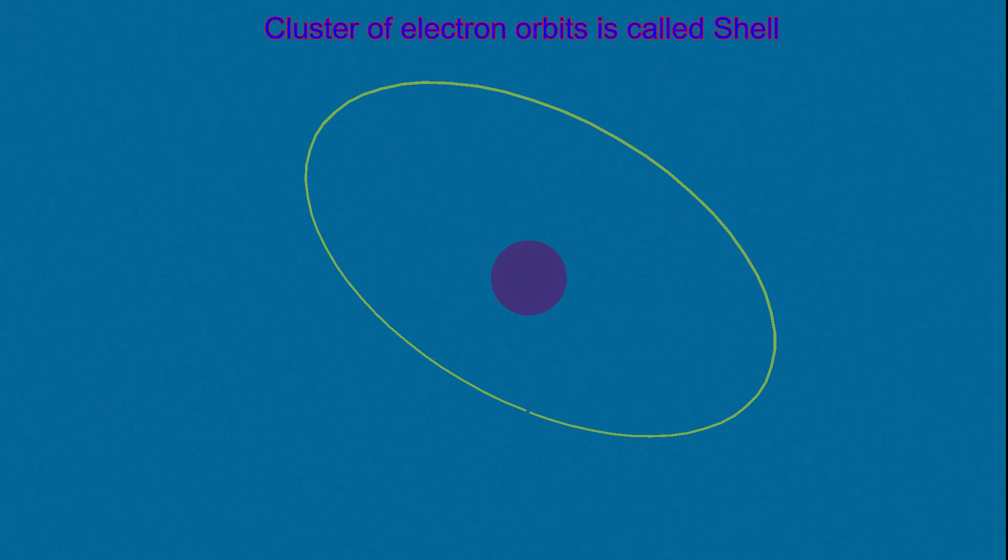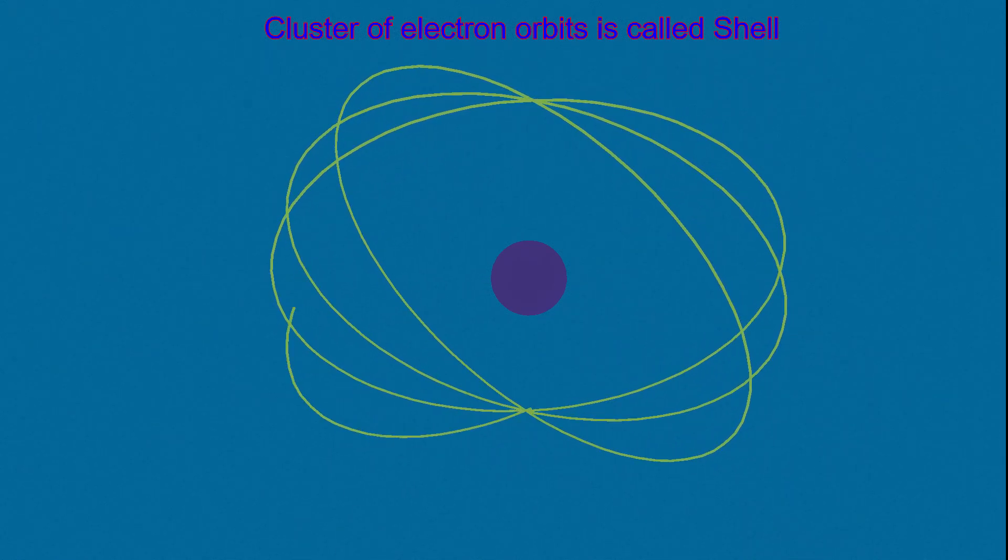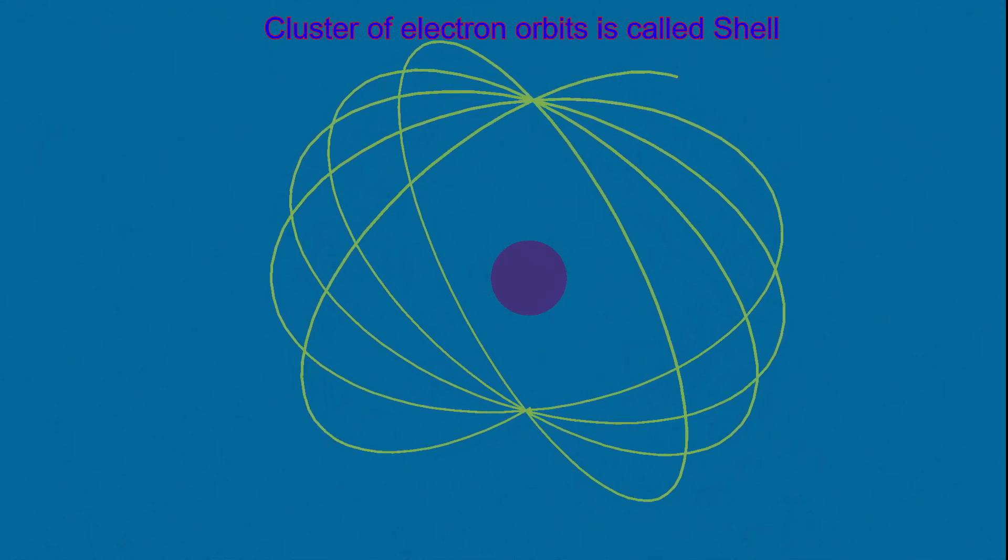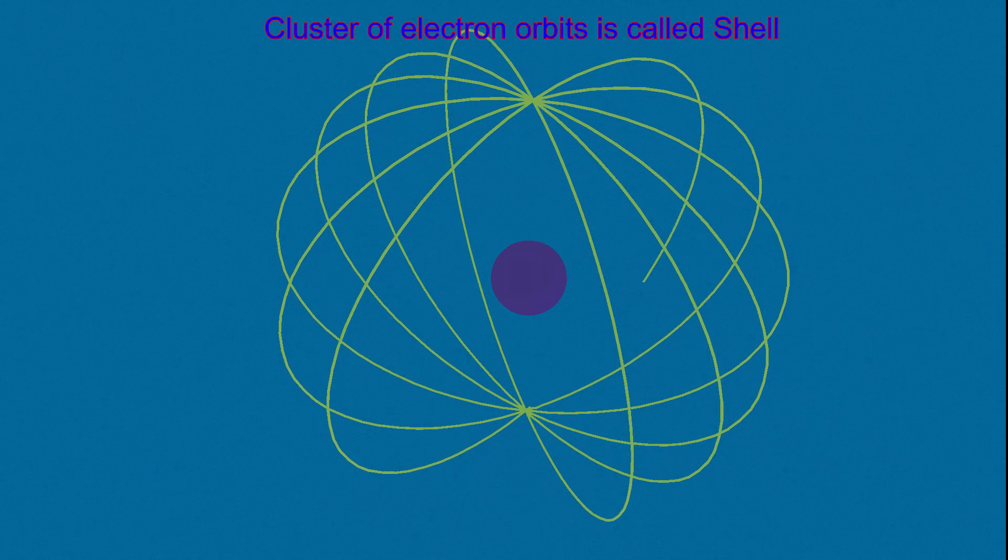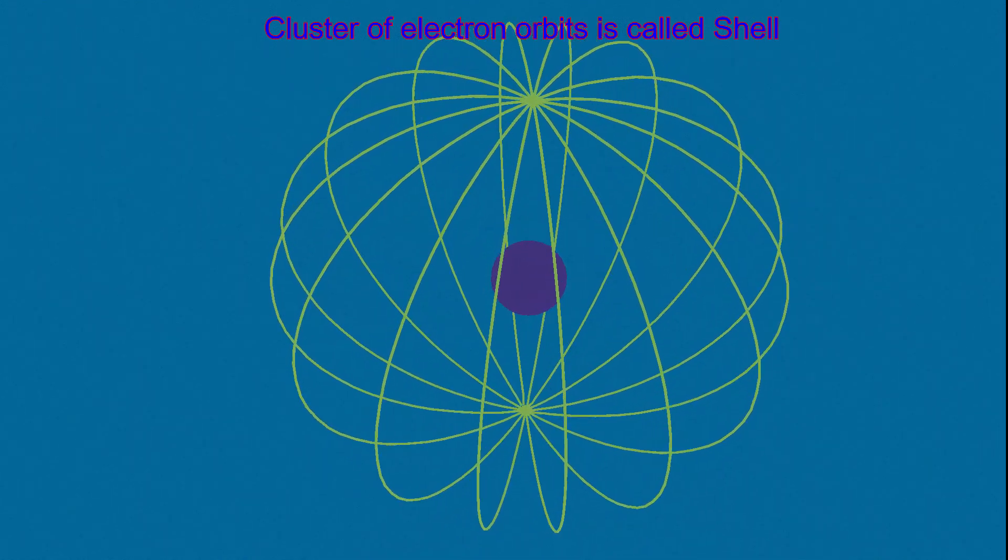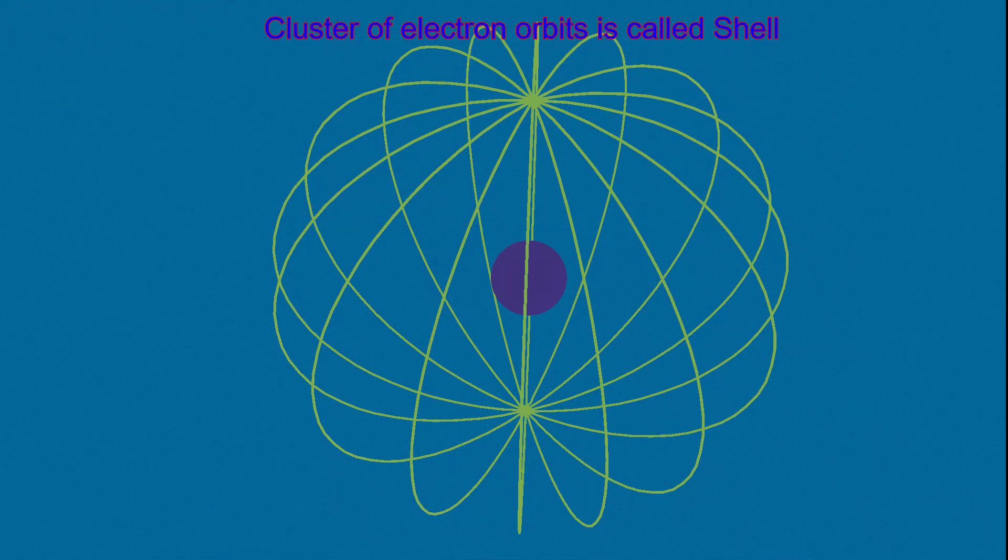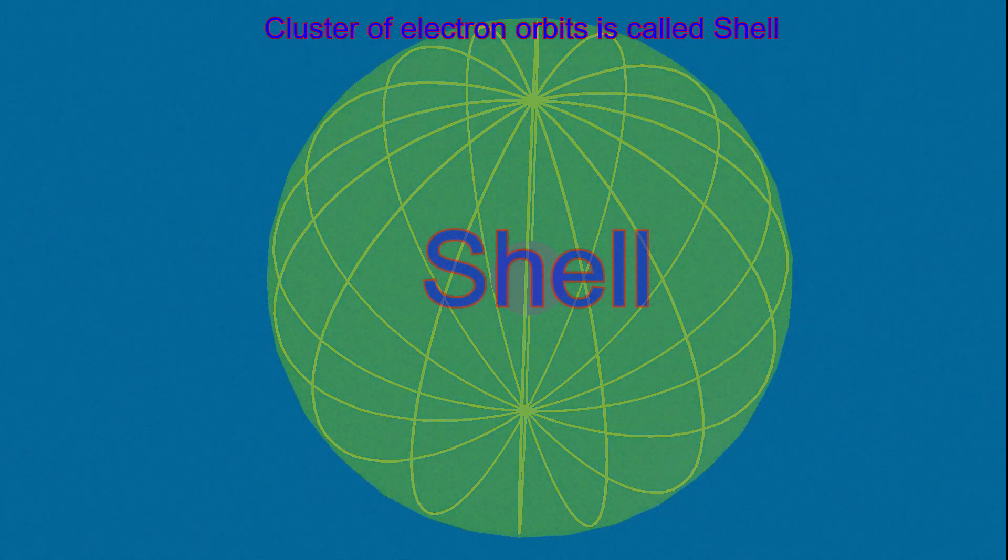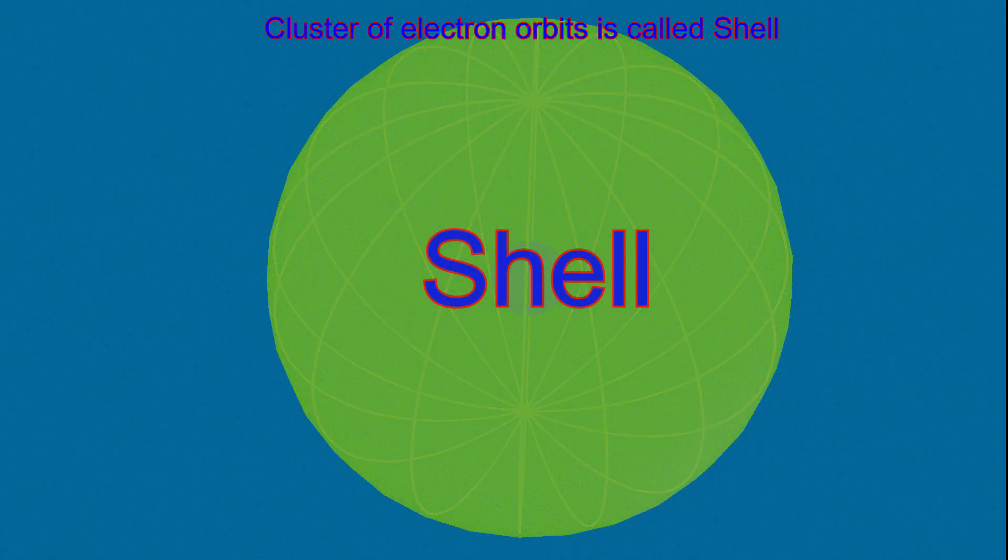Now let us learn about another concept called shell of an atom. It is noteworthy that shell is also just a concept like orbit and nucleus. It doesn't exist physically in an atom. If an atom has multiple electrons, each electron will have individual orbits. The cluster of these orbits is called shell. Basically, shell is an imaginary sphere that represents all the orbits of an atom.